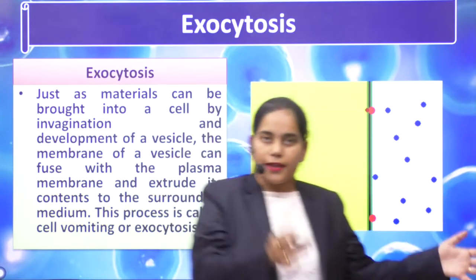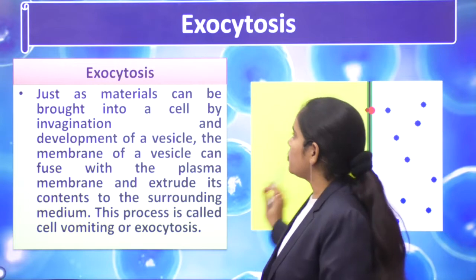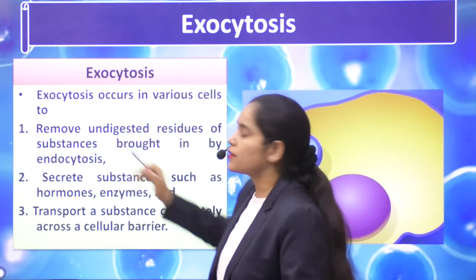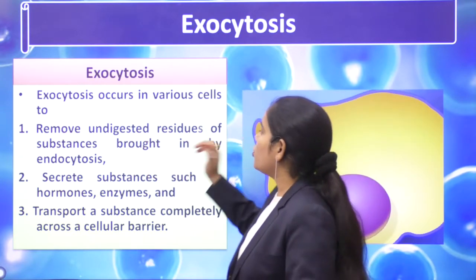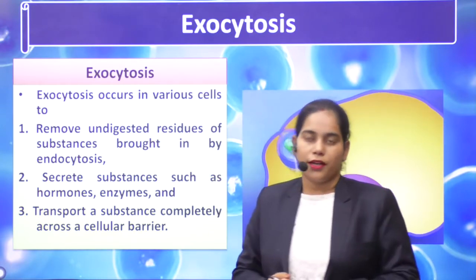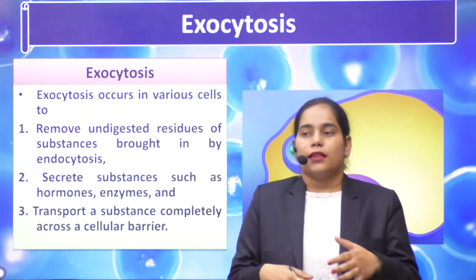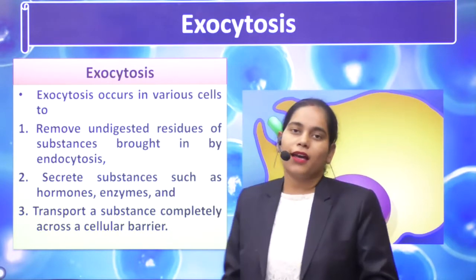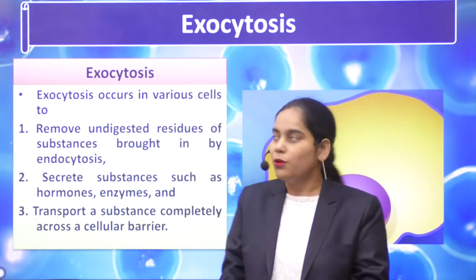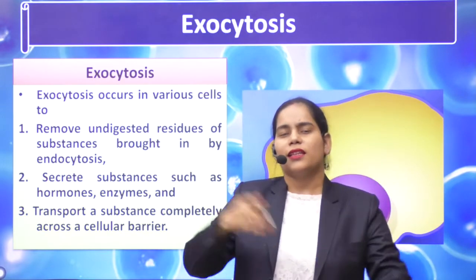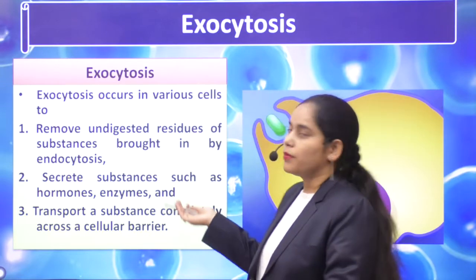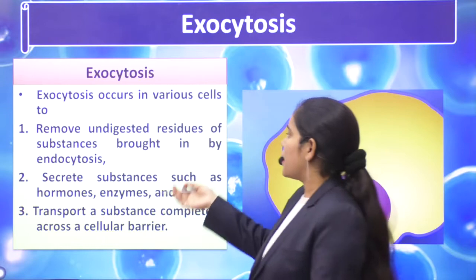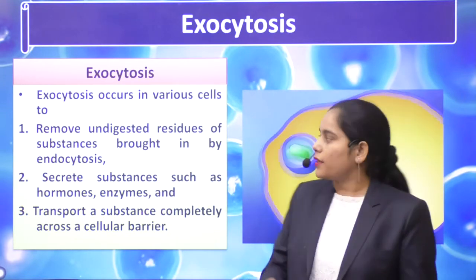Exocytosis occurs in various cells. Why is exocytosis needed in many cells? To remove undigested residues of substances brought in by endocytosis. When endocytosis takes in a lot of material — like someone who ate too much at a party and can't digest it — the cell also can't digest everything. So whatever undigested residues or waste material is there from endocytosis, when they entered the cells, the cell takes them out through exocytosis.